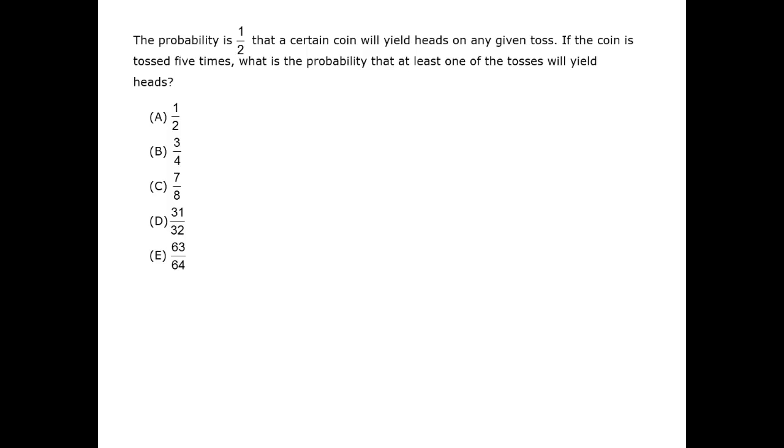This question asks for the probability that at least one of the five tosses is heads. There are a lot of ways for that to happen, but there's only one way for it not to happen, which is that all five tosses are tails.